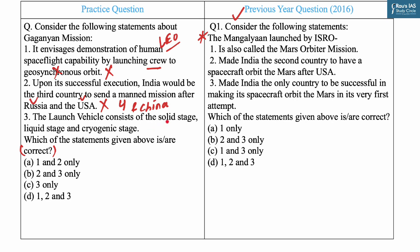Statement three says the launch vehicle consists of three stages: solid stage, liquid stage and cryogenic stage — this is correct. This will be done through the GSLV Mark 3 rocket, popularly known as Launch Vehicle Mark 3, which consists of these three stages. So the correct statement is three only — answer C. The PYQ answer is C, that is one and three only. That's all for today; stay tuned for more updates.